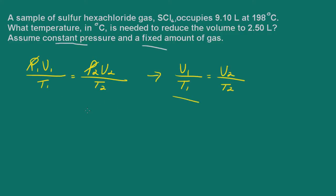We're told that our gas occupies 9.1 liters at 198 degrees. So our initial volume is 9.1 liters and our initial temperature is 198 degrees, and this is in Celsius. Now remember when using the combined gas law, we have to convert to Kelvin. So Kelvin temperature will equal 198 degrees plus 273.15, so our Kelvin temperature then will be 471 Kelvins.